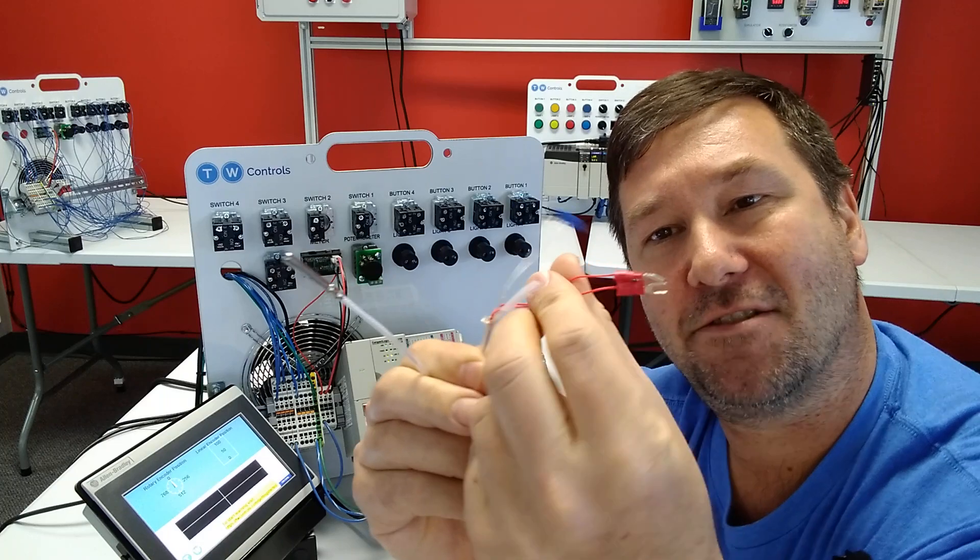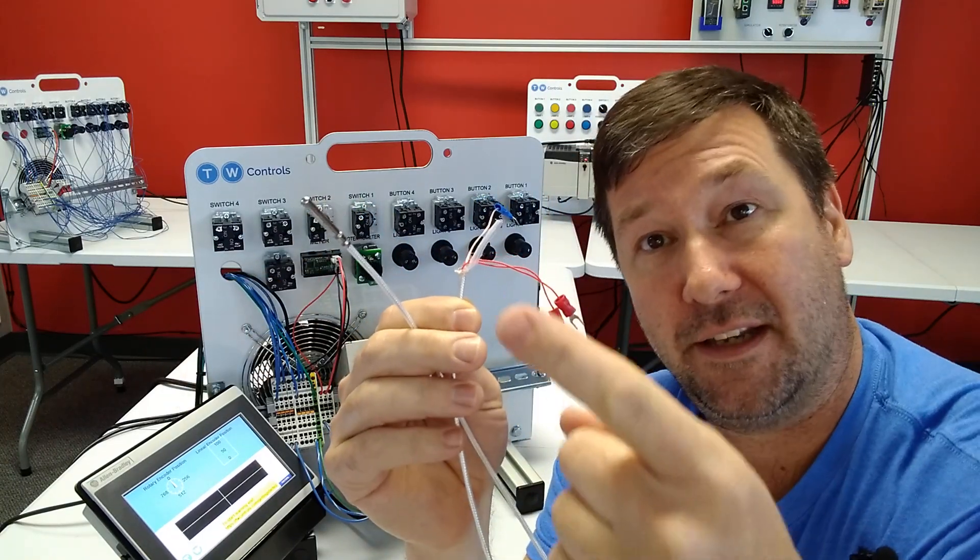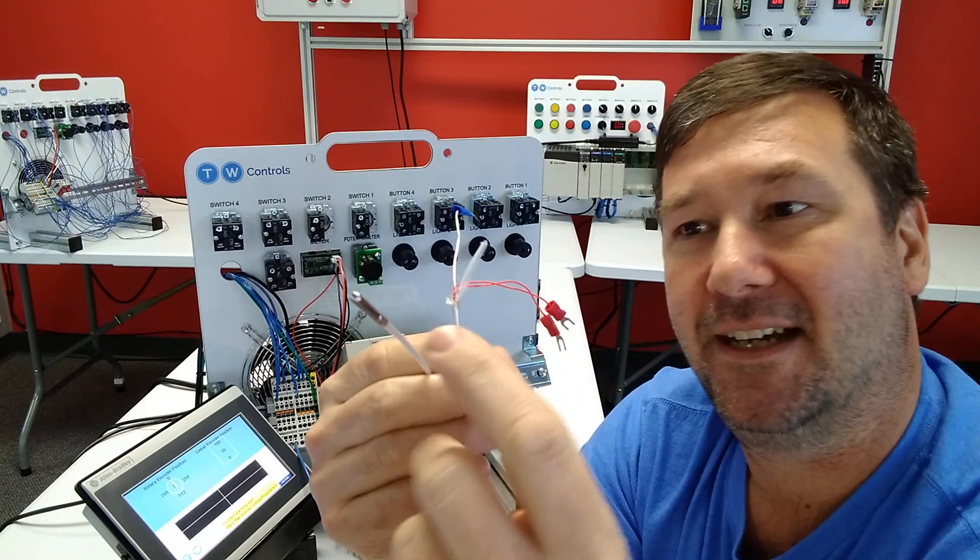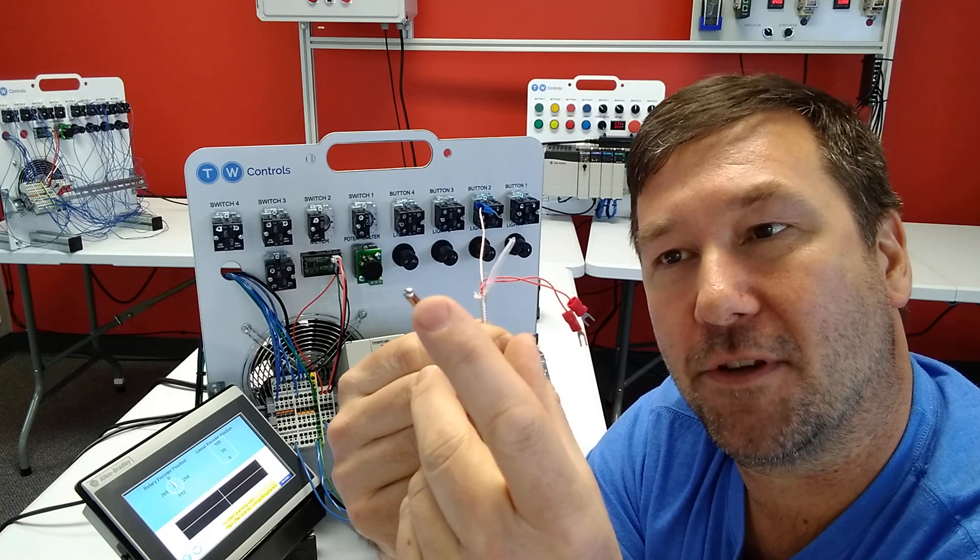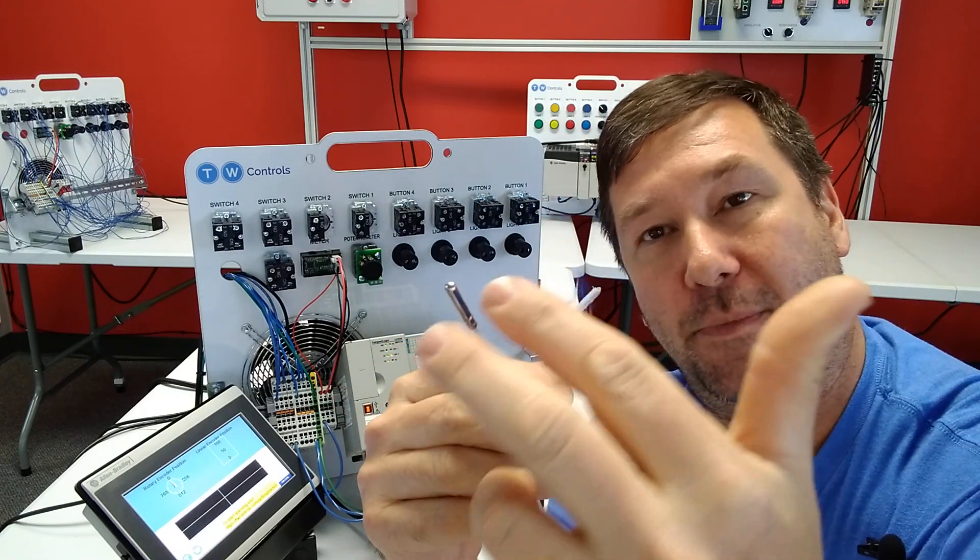And what that allows you to do is actually measure the resistance of all your wire in your circuit. And so that way you can compensate for that and only account for the resistance between this and this to determine your temperature.